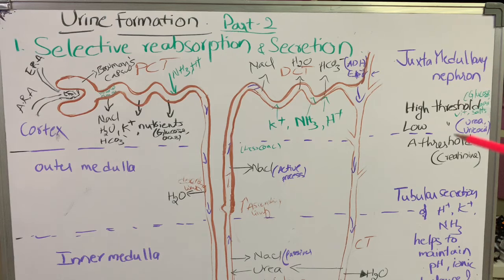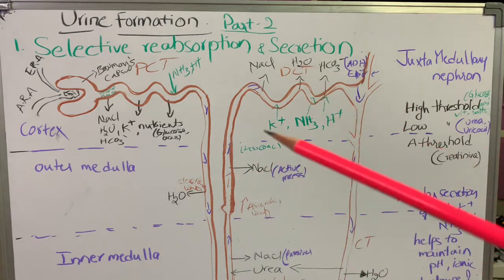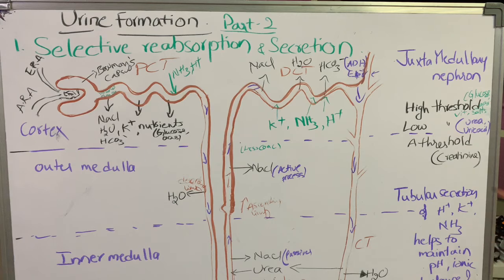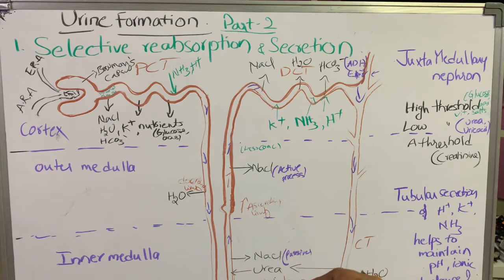The urine formed and sent out from the collecting duct is hypertonic compared to blood plasma. In this way, the primary urine — which is hypotonic to plasma — becomes hypertonic urine after selective reabsorption and secretion. This is the importance of the juxta-medullary nephron, where Henle's loop is deeply seated into the medulla. We will study the regulation of kidneys in the next class.